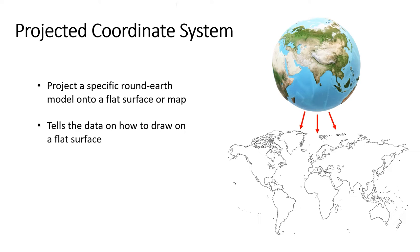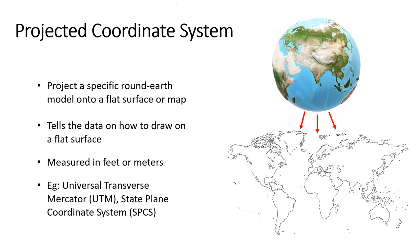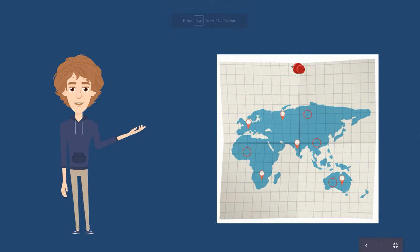Some projections are good for preserving areas on your map, others for keeping angles or distances. The projected coordinate system places points on a two-dimensional projection rather than using degrees to represent on a spheroid. These coordinate systems frequently express the x and y coordinates for particular points using measurements in feet or meters. Examples of projected coordinate systems include Universal Transverse Mercator, State Plane Coordinate System, and Lambert Conformal Conic.